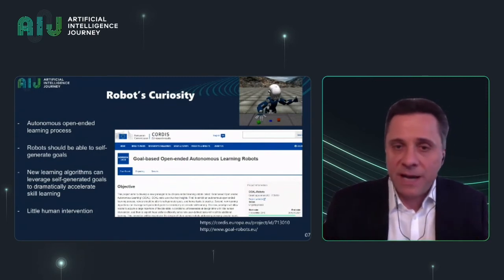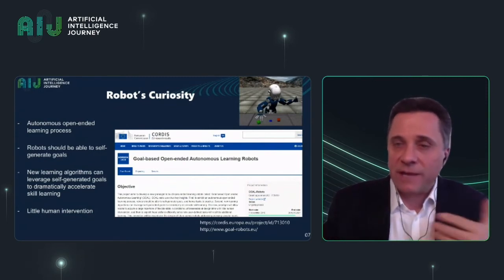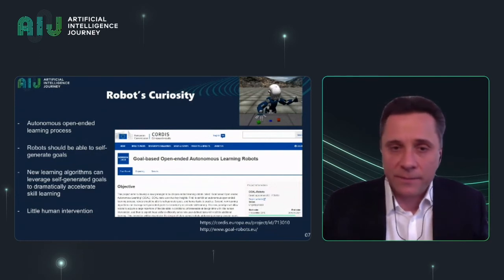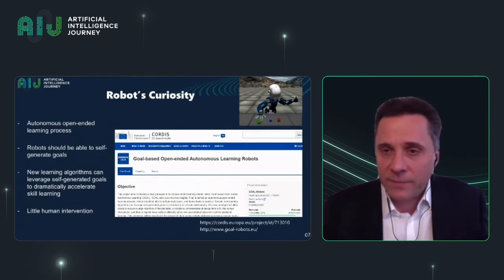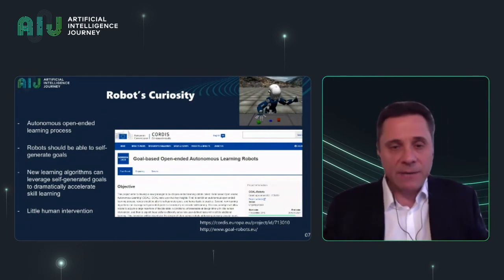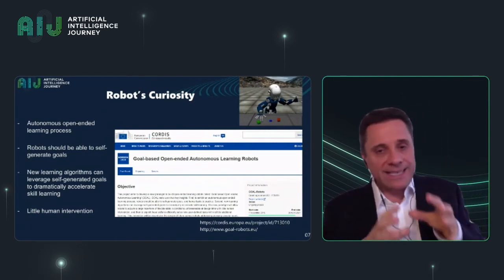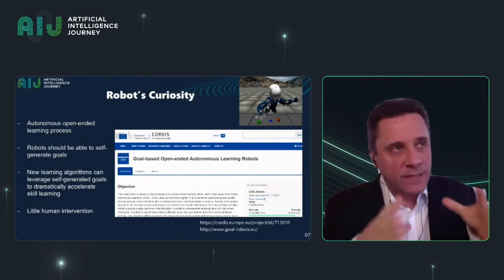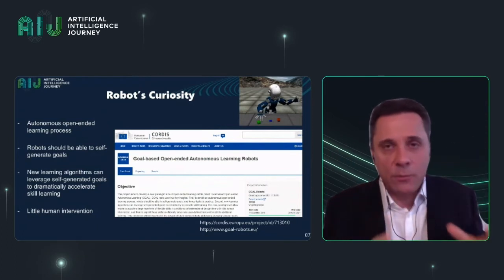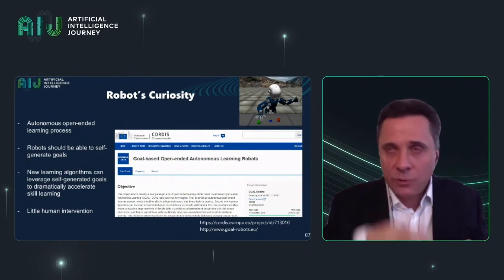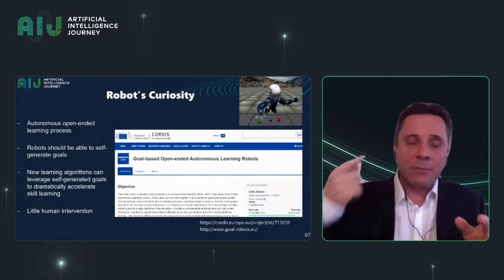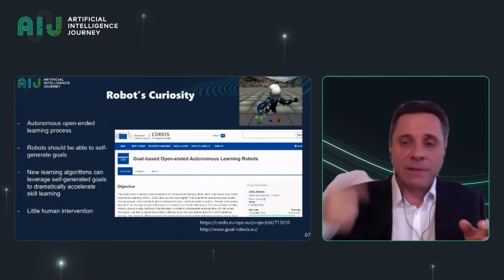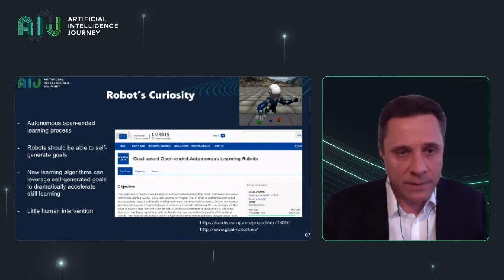Robots need to interact with nature and with the environment, and set new goals. In what way? If a neural network identifies an unknown pattern, it doesn't return a mistake — it tries to study it. In this way, it retrains or fine-tunes the neural network. This is a very important area and we will keep it as part of the roadmap.